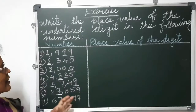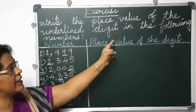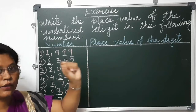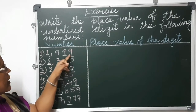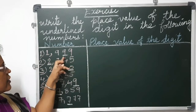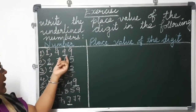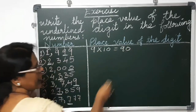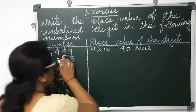Now we will start with the exercise. The exercise says: write the place value of the underlined digit in the following numbers. Numbers are given and you have to write down the place value of the digit which is underlined. The first number is 1,999 and the underlined digit is 9 in tens place. So 9 into 10 equals 90, and the place value of this 9 is tens.